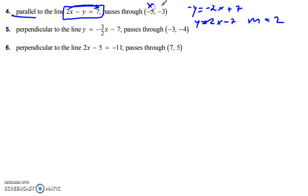Parallel slope is the same. Goes through this point, x and y. Follow the same procedure. Negative 3 is equal to 2 times negative 5 plus b. 2 times negative 5 is negative 10. So we have to add 10 to both sides plus 10. And that is 7 is equal to b. 7 is b, so y is equal to 2x plus 7 for number 4.